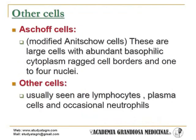Ashoff giant cells: They are modified Anitschkow cells with abundant basophilic cytoplasm, ragged cell borders, and one to four nuclei. Other cells usually seen are lymphocytes, plasma cells, and occasional neutrophils.